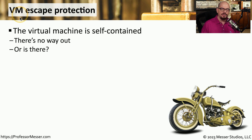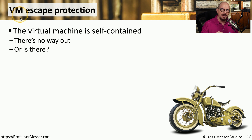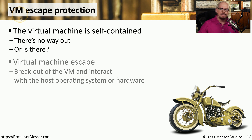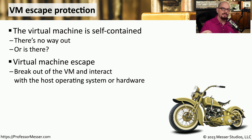If you've ever used a VM, you know that it is its own self-contained system with its own CPU, memory, storage, and other resources. It's not possible to move from inside one virtual machine on a hypervisor to things on a different virtual machine on that same hypervisor. However, there have been instances where researchers have found ways to jump between these VMs. This is called a VM escape, and it allows the attacker to get access to one virtual machine and then find their way to connect to other virtual machines on that same hypervisor.